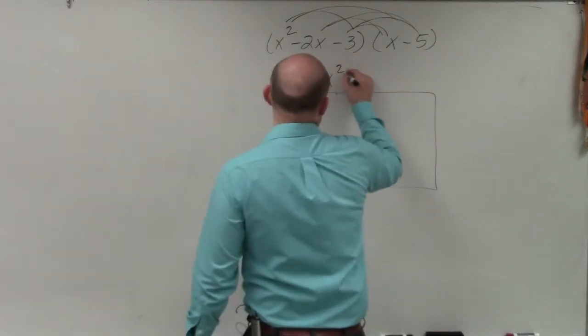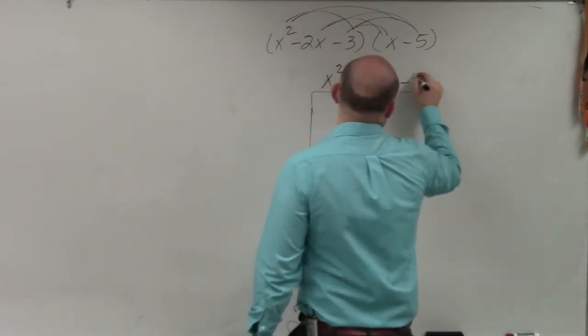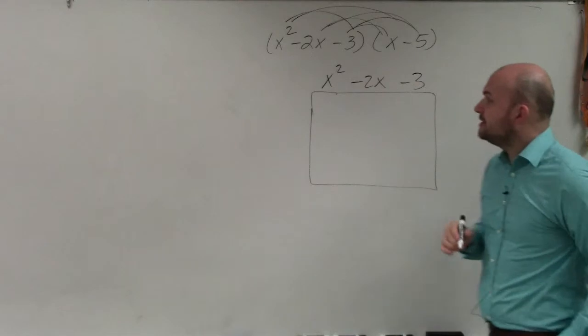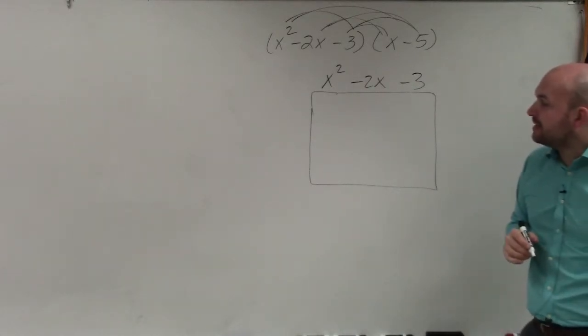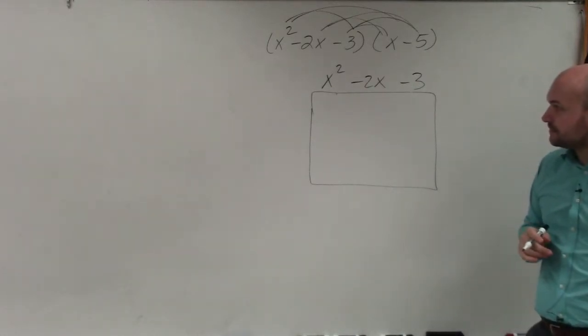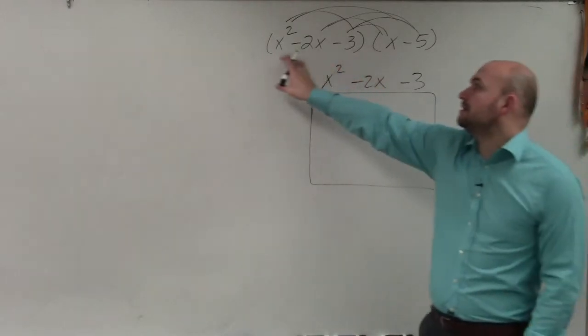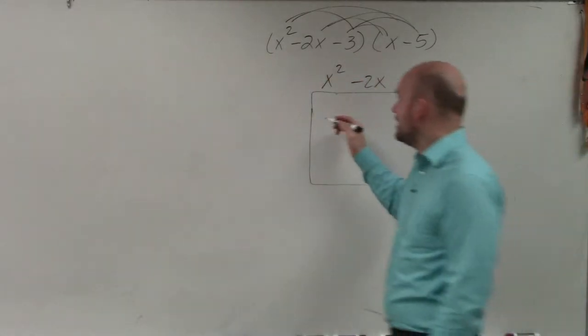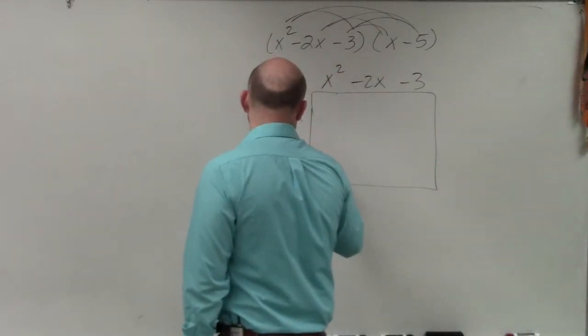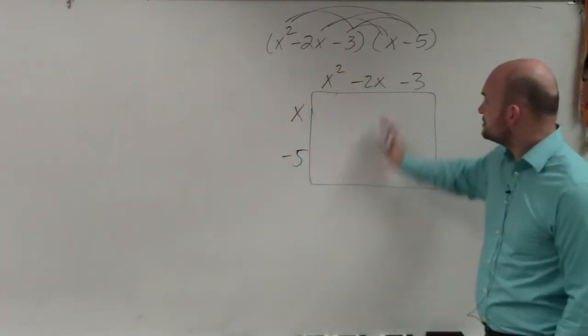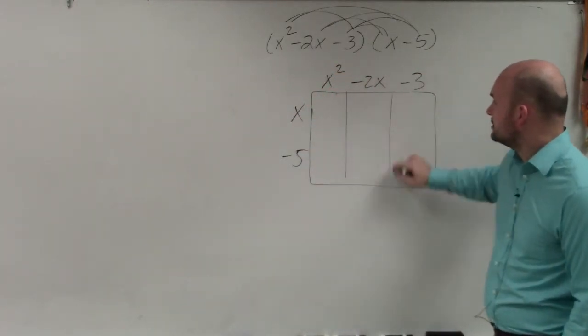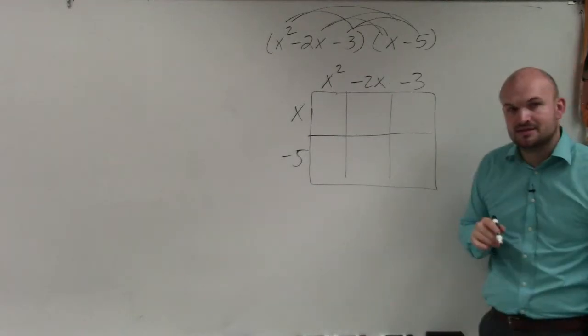So basically what you do is you just write one expression on one side and then another expression on the other side. Now, if you have three terms, you break it up into three different boxes. If you have two terms, you break it up into two different boxes.